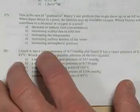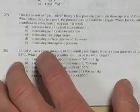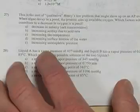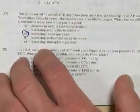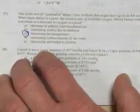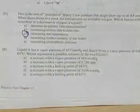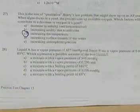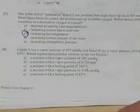Number 27 is a qualitative Henry's Law problem. What factors contribute to a decrease in oxygen in a pond? If you increase the temperature, less gas will dissolve — gases dissolve better when the water is colder. That's why trout like to live in cold streams.